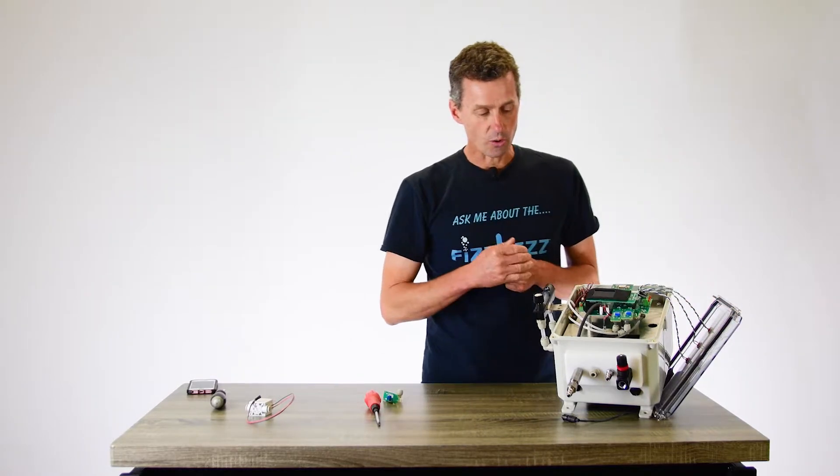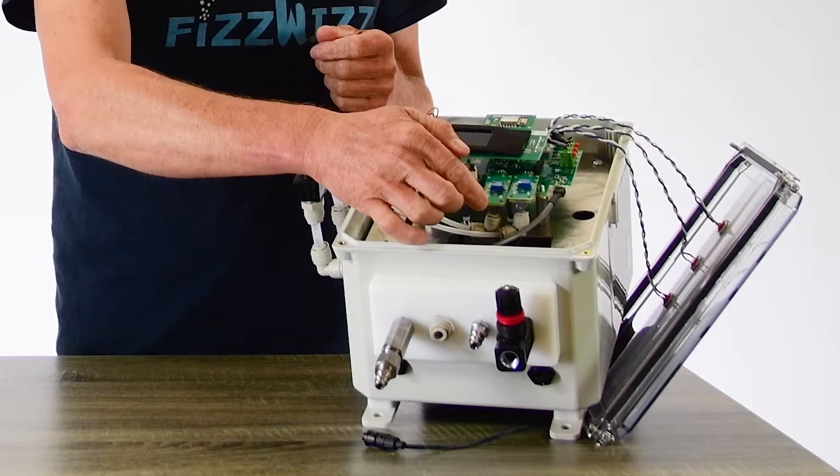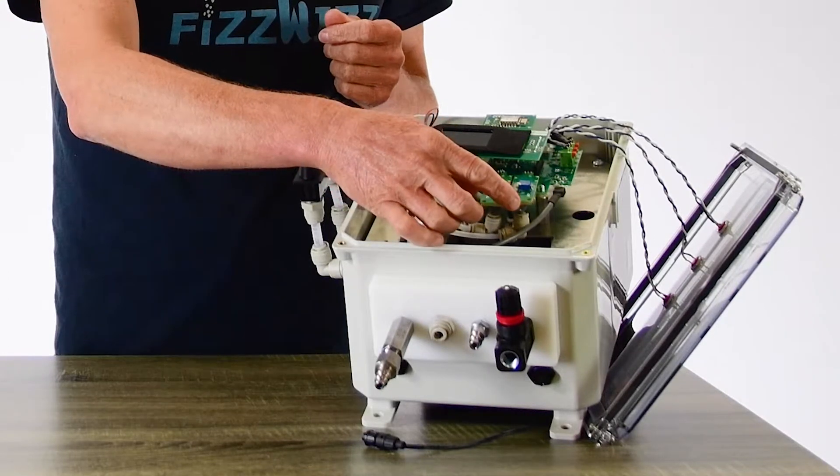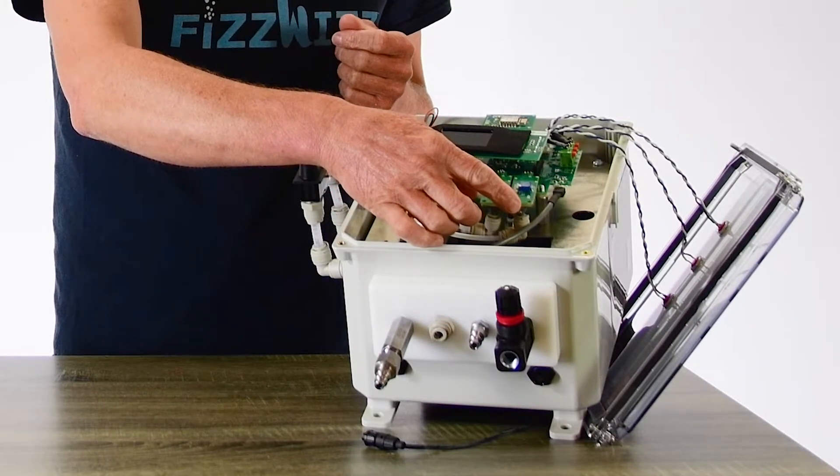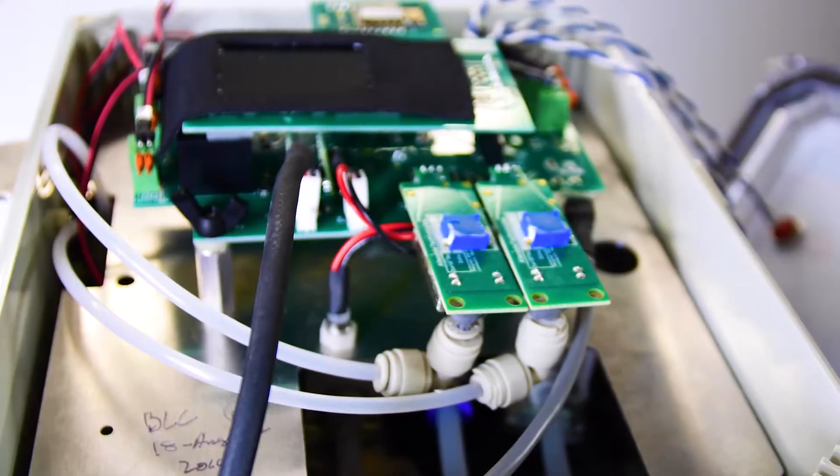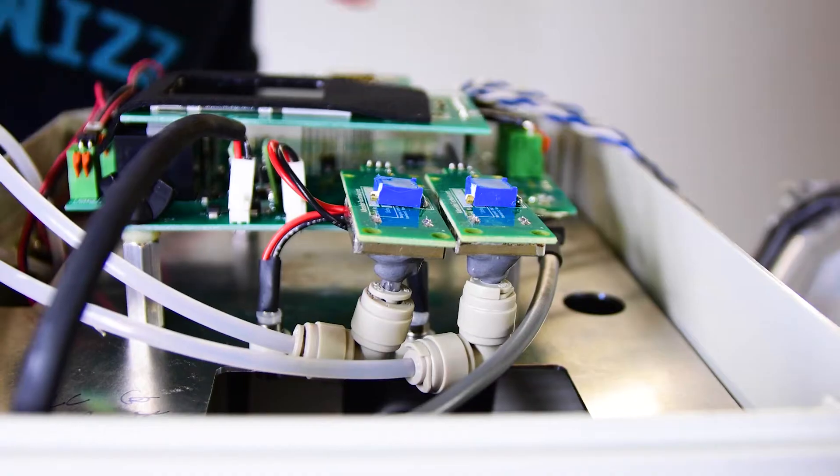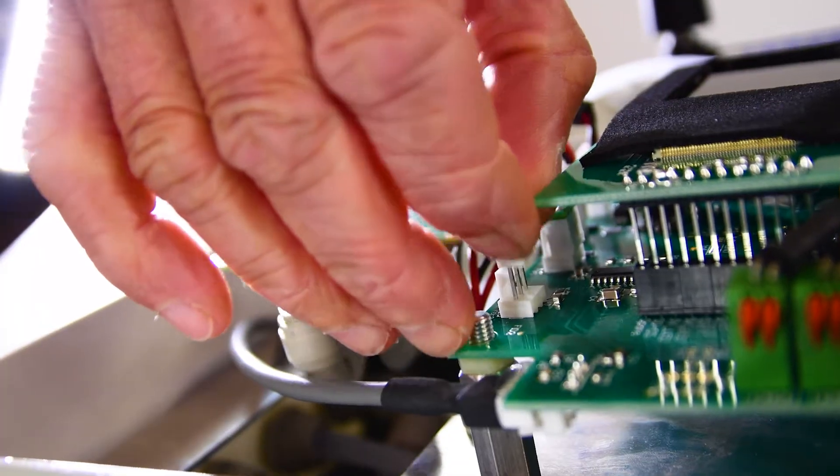Here are your two pressure transducers. This is the CO2 in transducer and this is the head pressure or bright tank transducer. We're going to service the bright tank transducer on this one. They unclip very easily.